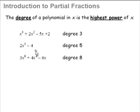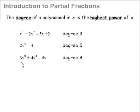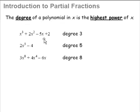Likewise, for this polynomial, the highest power is 5 and therefore we say that this polynomial has a degree of 5. And of course, this polynomial here will have a degree of 8. So this is what degree of a polynomial is all about — the highest power of the polynomial.